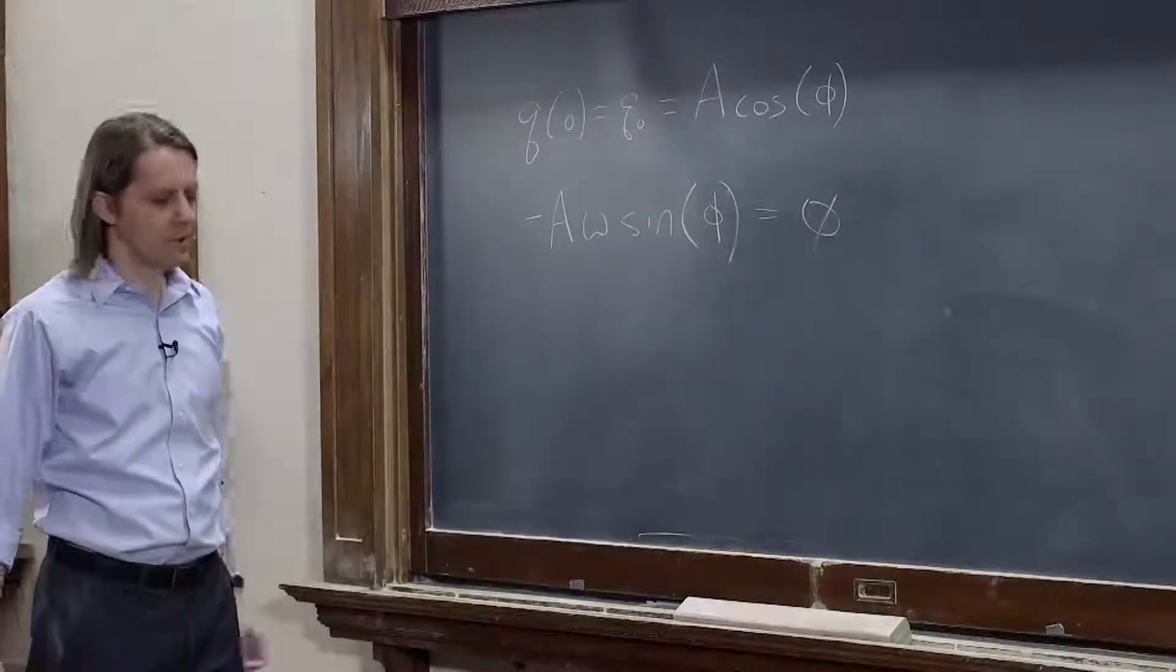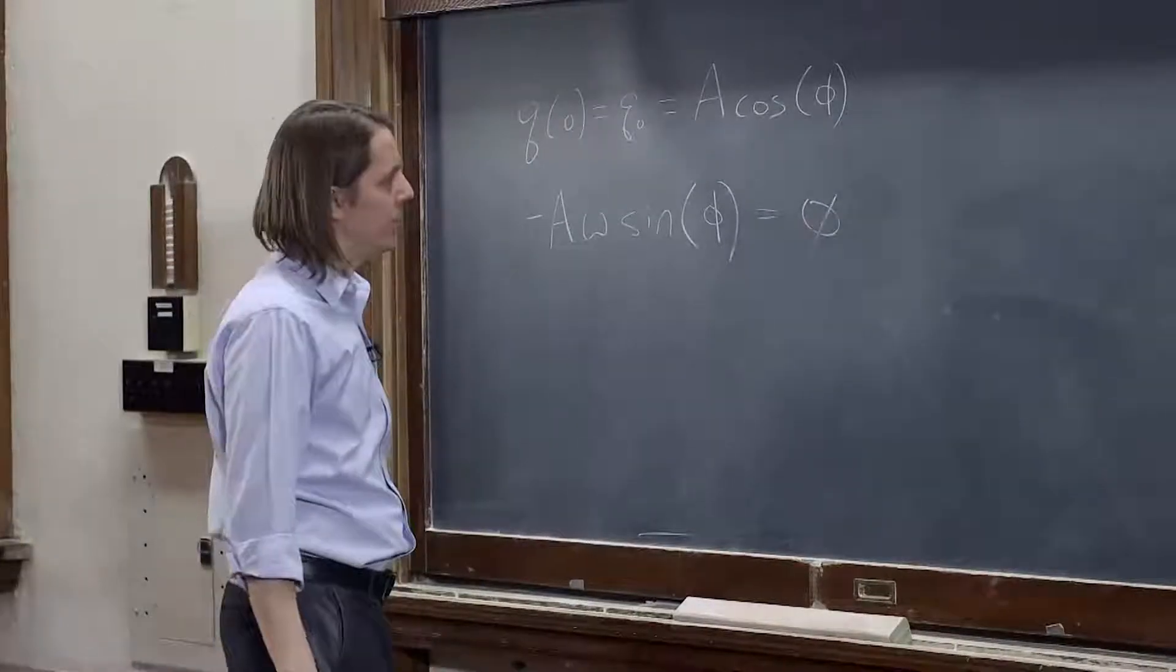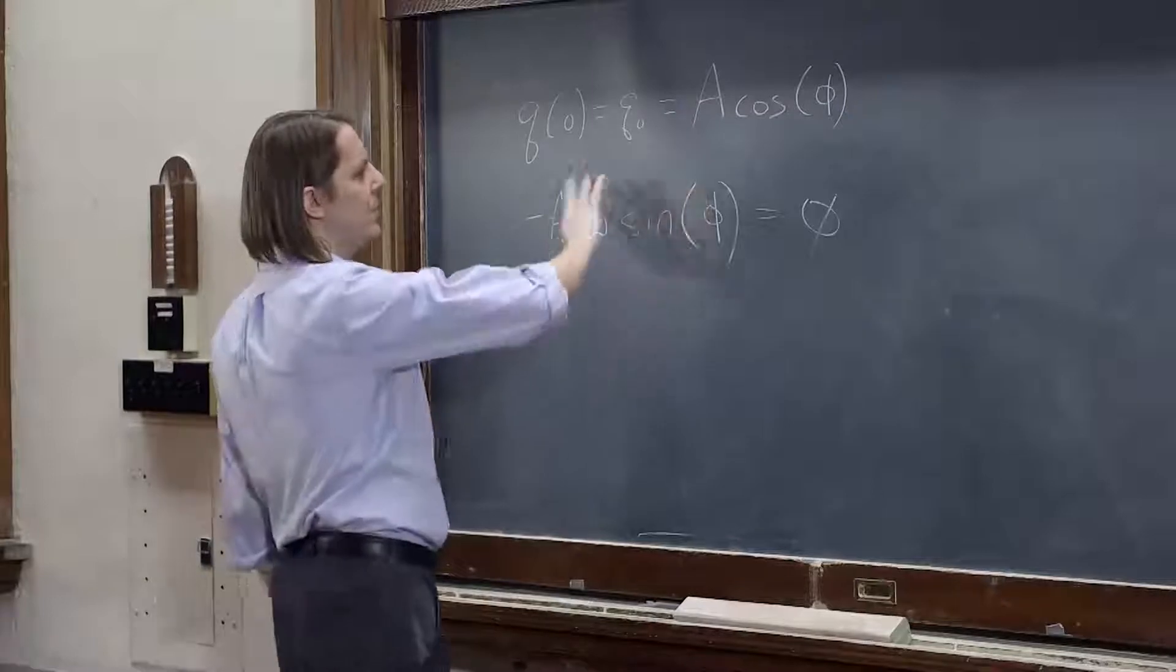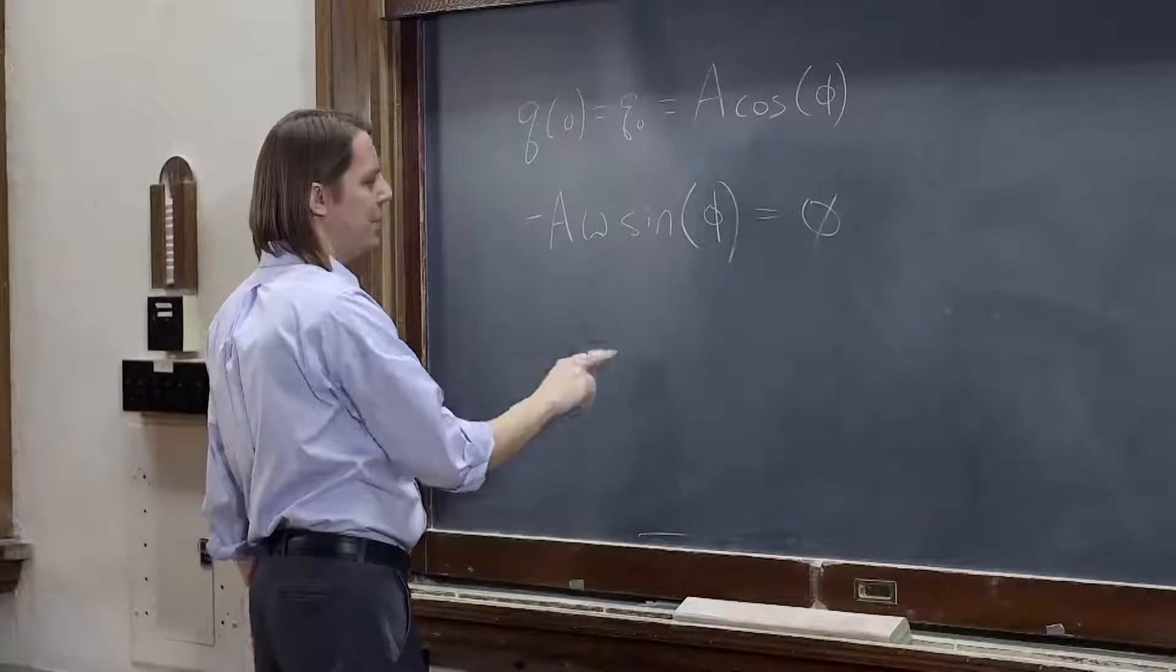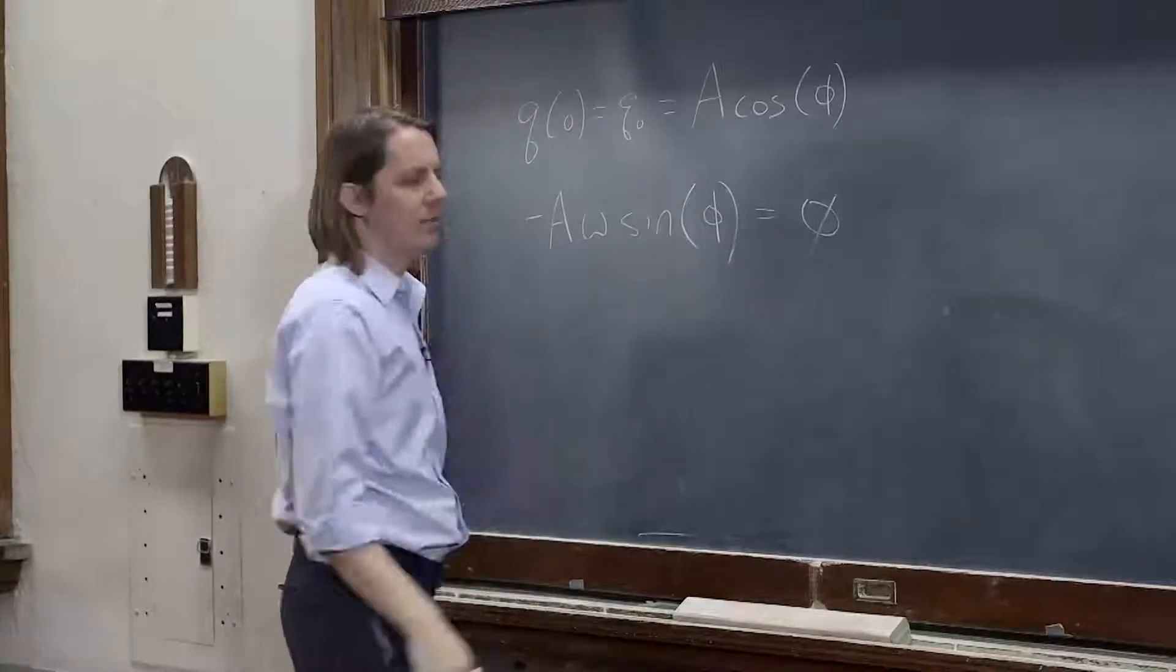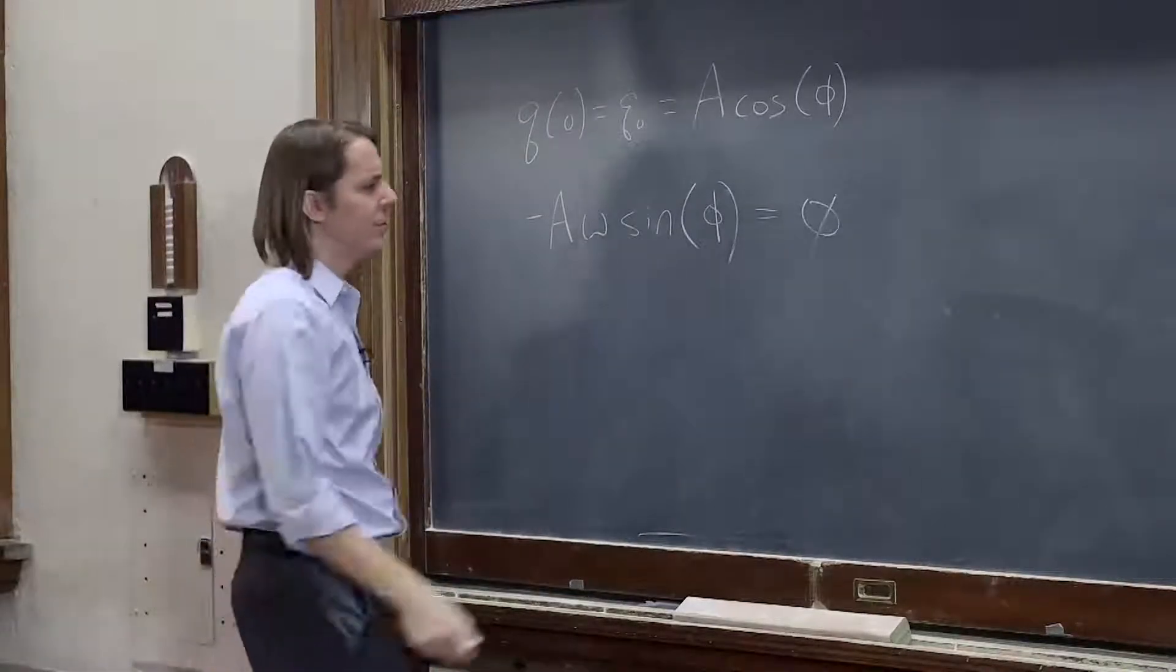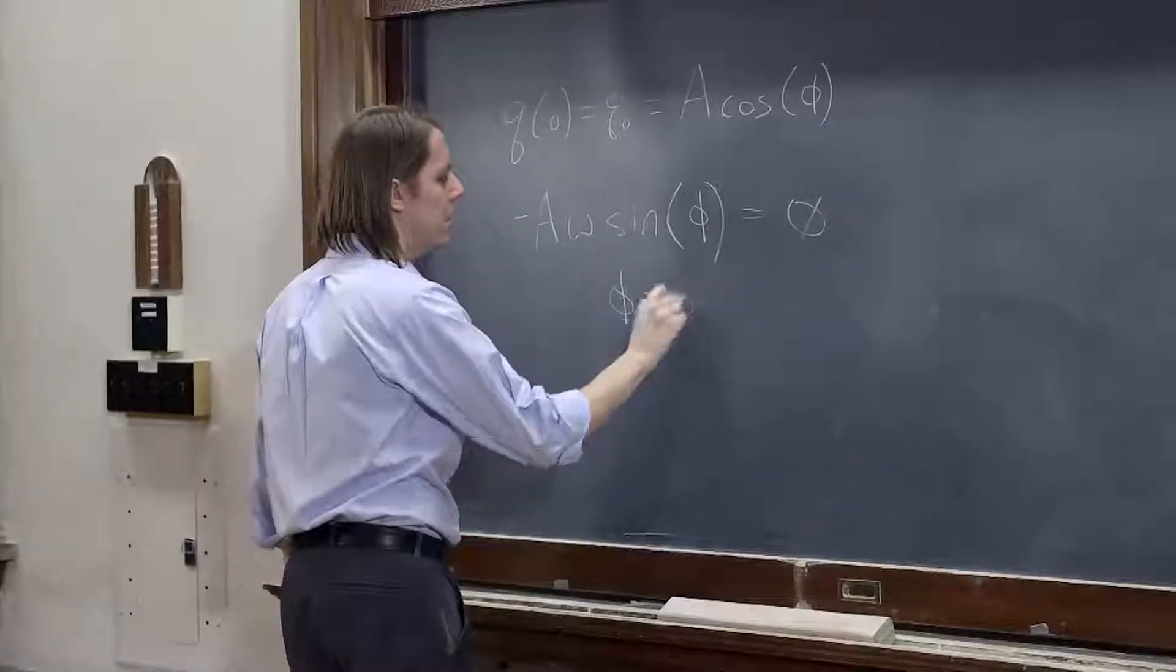Again, two equations, two unknowns. So let's see, this is the zero, this is the one that we deal with. A can't be zero, omega can't be zero, we need sine of phi to be zero, and where is sine zero? Sine is zero when phi equals zero. I hope you can tell my phi's from my zeros.